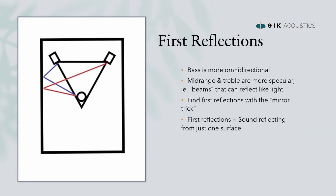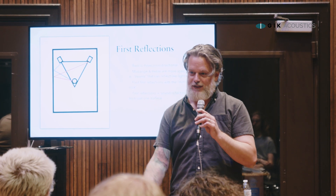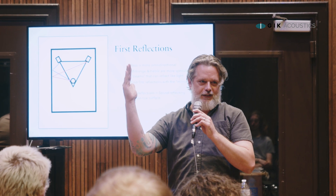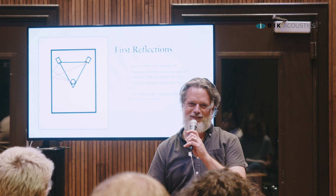The way we fix that problem is by treating first reflection points. That blue line looks like a billiard shot going from the left speaker to the left wall and hitting your head, and the right speaker also has its reflection path hitting that same wall. You can use a mirror to find that point — have somebody move a mirror along your wall, and when you see the speaker, that's the reflection point, because these frequencies behave like light. If I put a small patch of absorption right where those lines hit, everything would be perfect — but only for that one exact point.